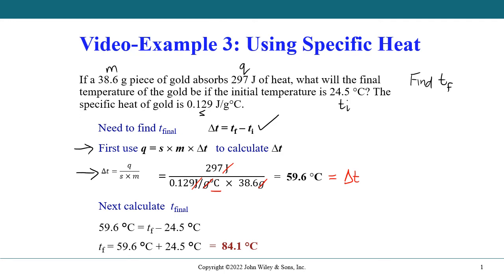Now we can find T final by using delta T equals T final minus T initial. We then rearrange and we see that T final is equal to delta T plus T initial.